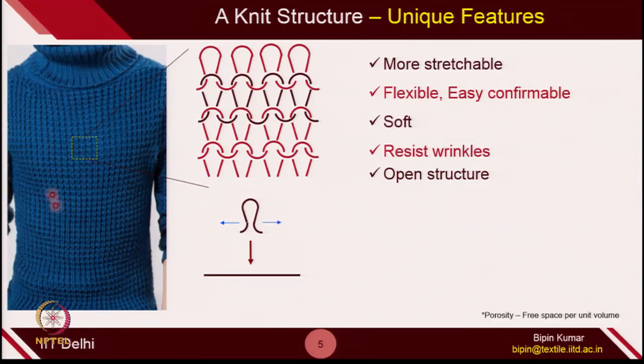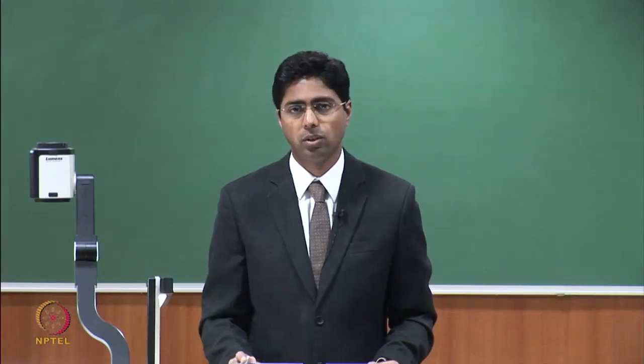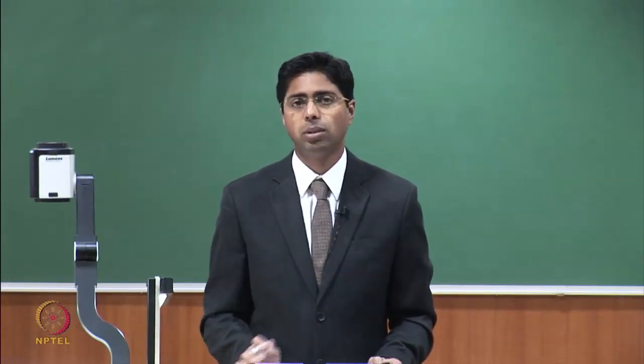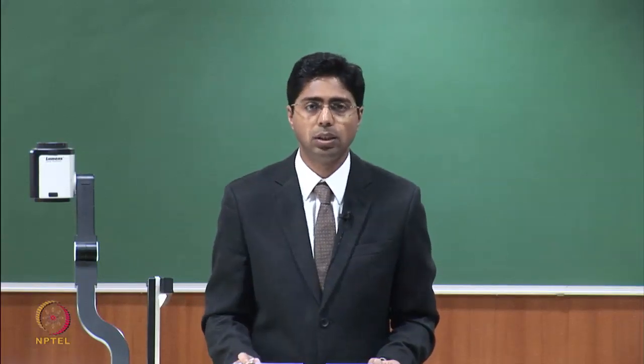If you see this knitted structure carefully, it is very, very open — these loops are comparatively open. That's why it allows you a very good amount of moisture and air exchange. That's why, if you see most sports garments, they are actually made up of a knitted structure, because it is very open and you feel more comfortable since it allows good transmission of air and moisture. More porosity — this is one of the most fundamental unique features of a knitted structure.